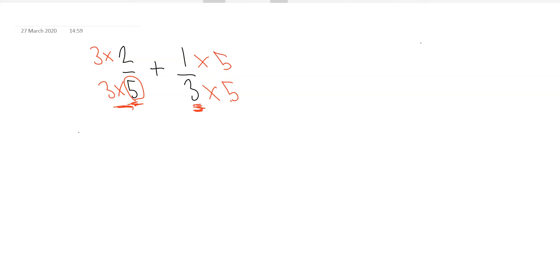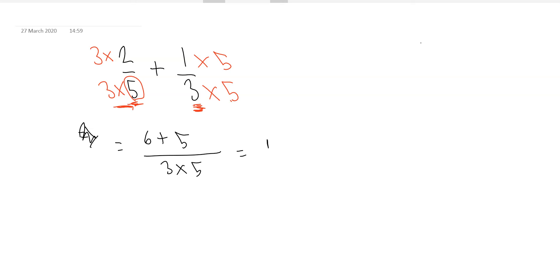What we can do to make this denominator the same on the other fraction is to times by 5, and that means we're multiplying by 5 up at the top as well. So we end up with 2 times 3 which is 6, plus 1 times 5 which is 5. 6 plus 5 equals 11, divided by 3 times 5 which is 15. So the answer is 11 over 15.